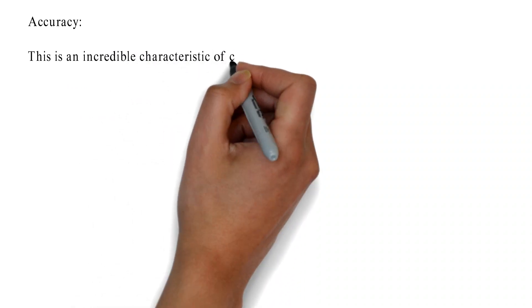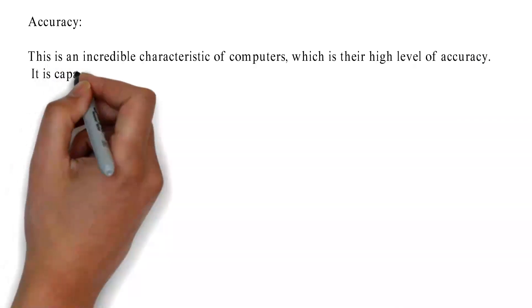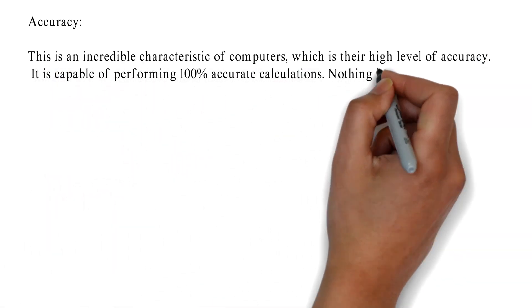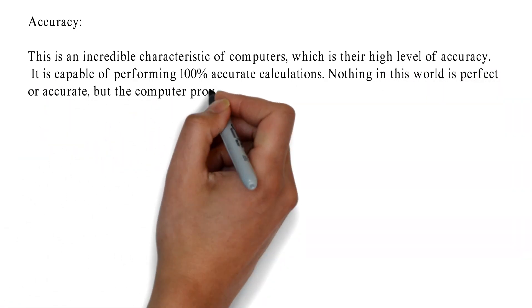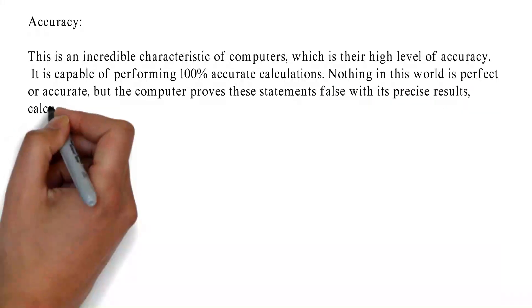Accuracy: This is an incredible characteristic of computers, which is their high level of accuracy. It is capable of performing 100% accurate calculations. Nothing in this world is perfect or accurate, but the computer proves these statements false with its precise results.